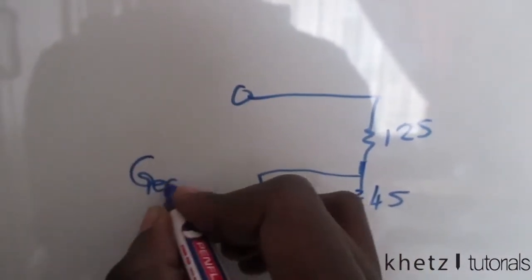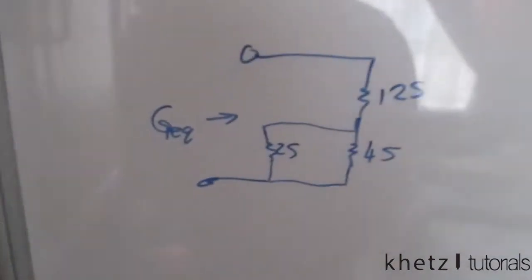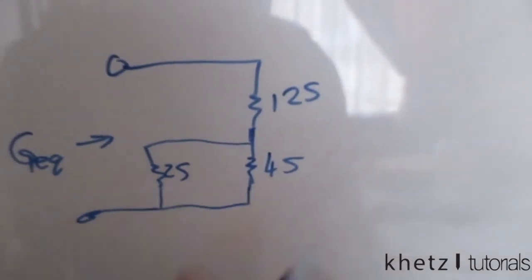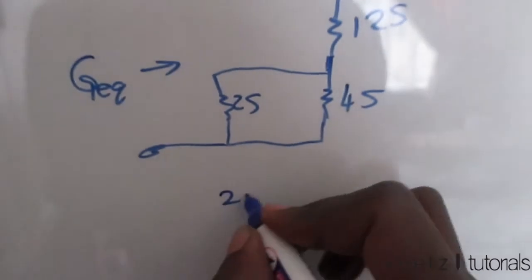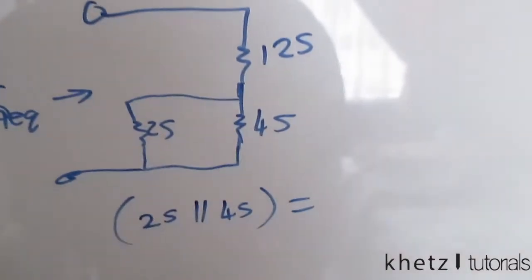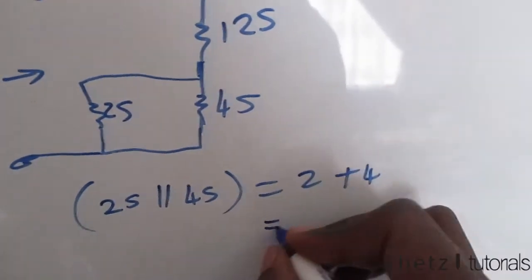So we're looking for G equivalent. So what we have now is two Siemens in parallel with two Siemens in parallel with four Siemens. So what we do is simply add four plus two, which is six Siemens.